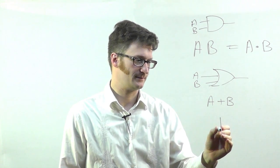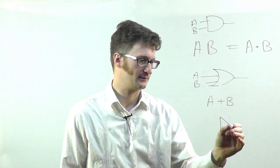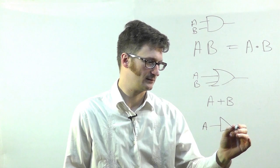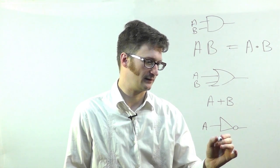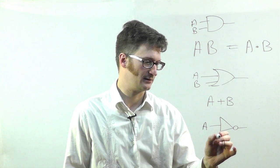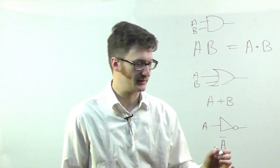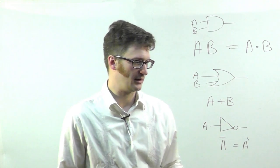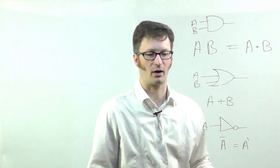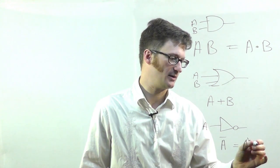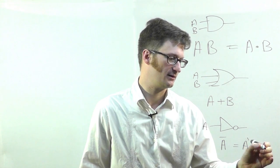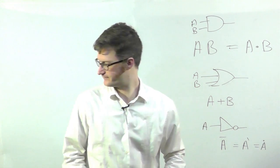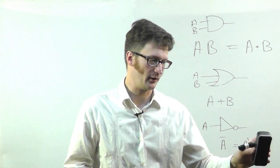The inverter gate, or the NOT, is sometimes drawn with a bar above it. It's also sometimes drawn with a little apostrophe, like A prime, and you may even see it with a dot over top. This one's rare though.